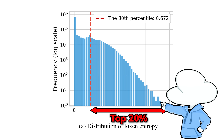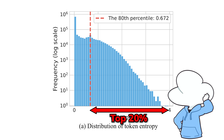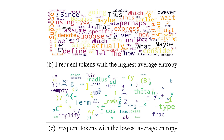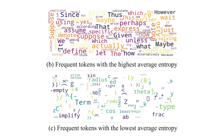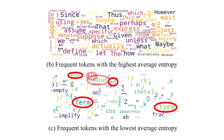This graph is log-scaled, so it is a bit confusing at first glance. This means tokens like "maybe," "actually," "suppose," and "wave" would usually be high entropy, while tokens like "radius," "asian," "sin," "term," "ed," "type," and all kinds of closing brackets would usually be low entropy.